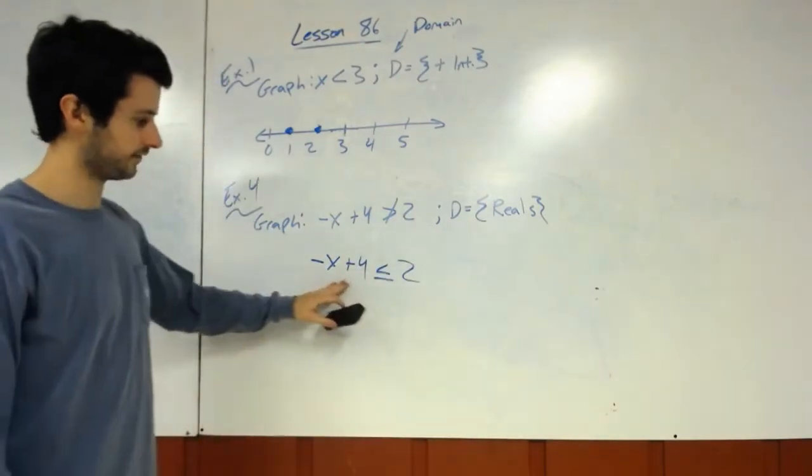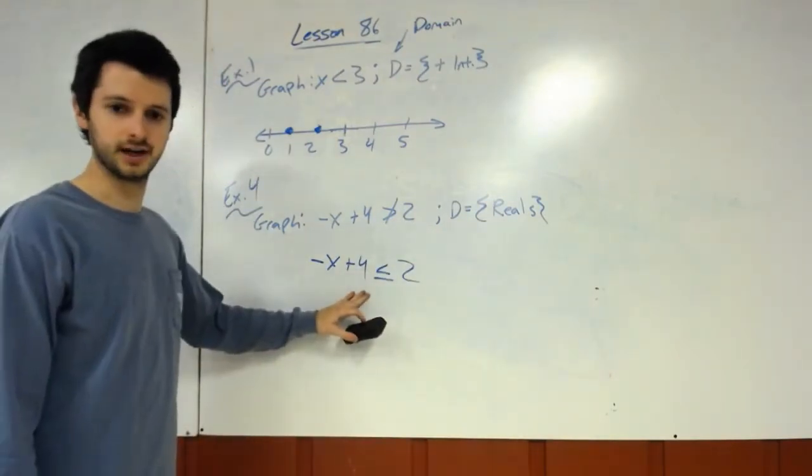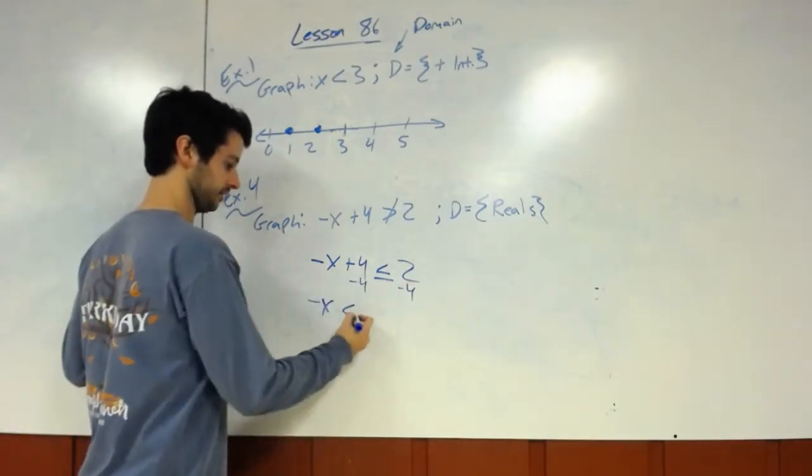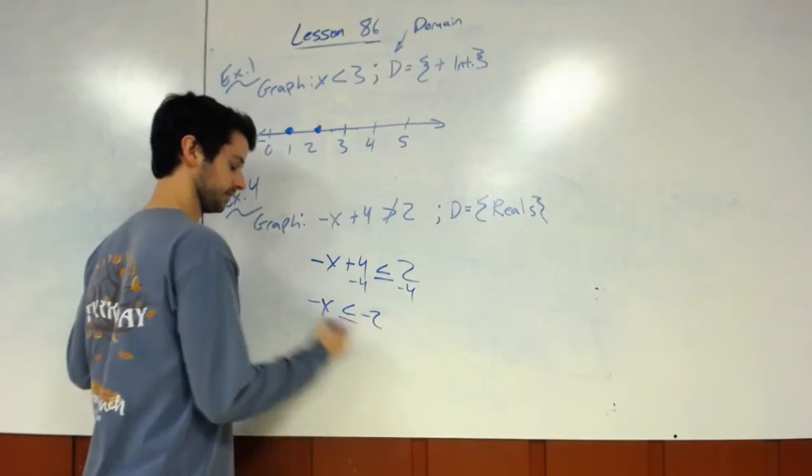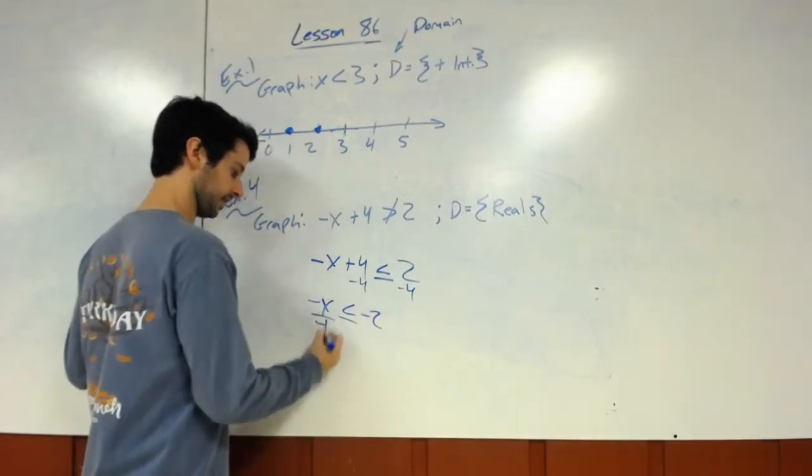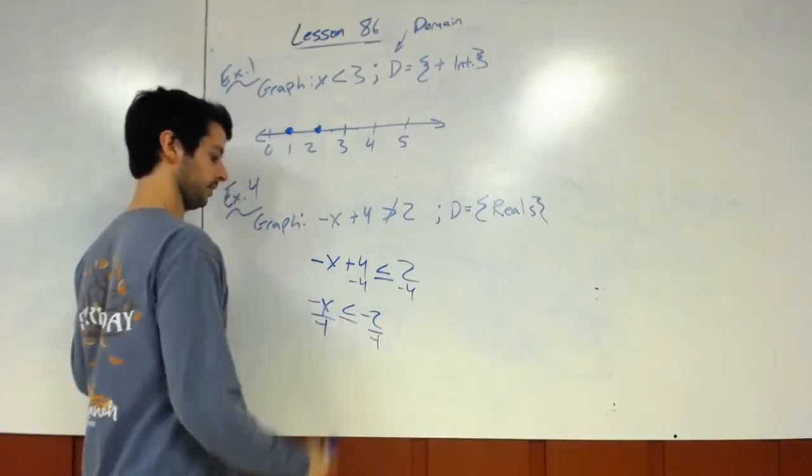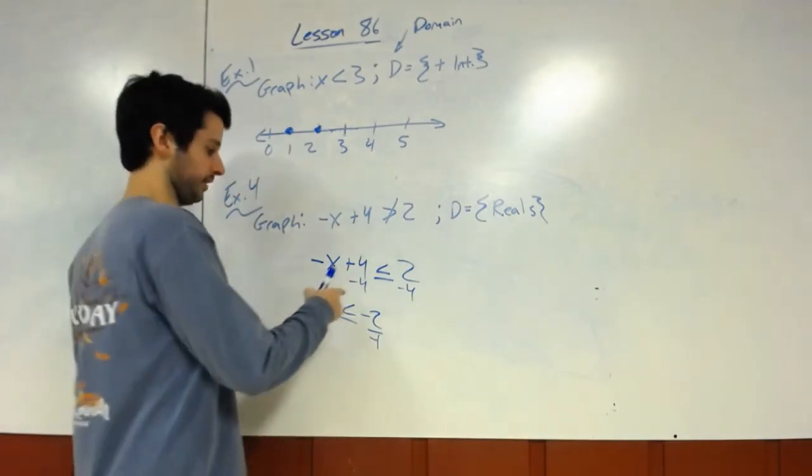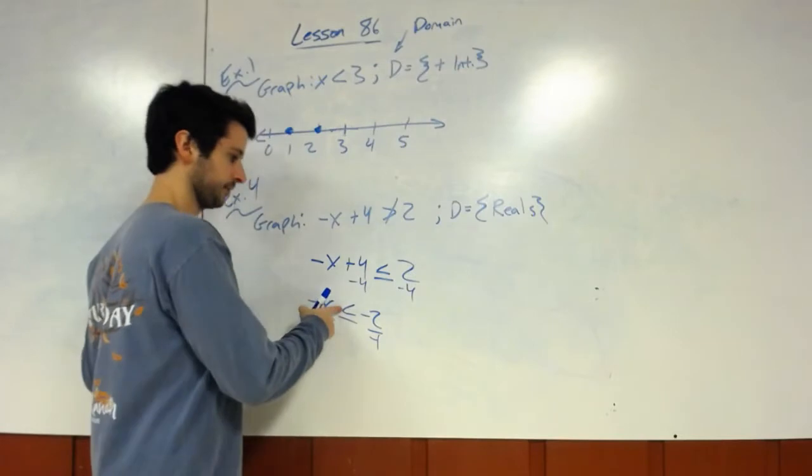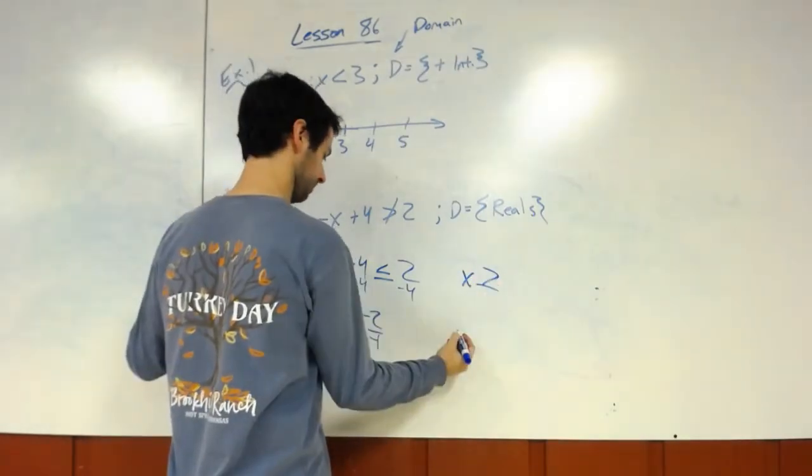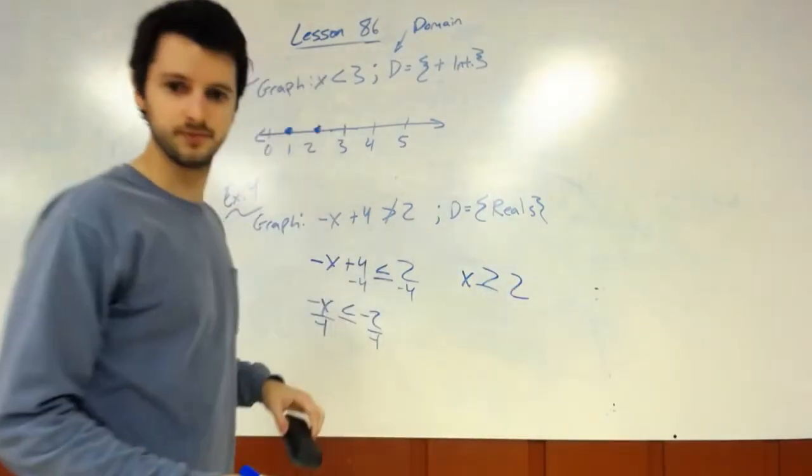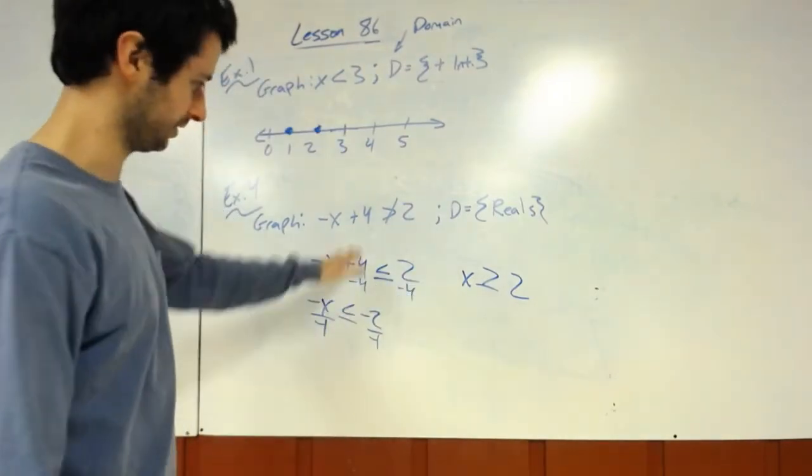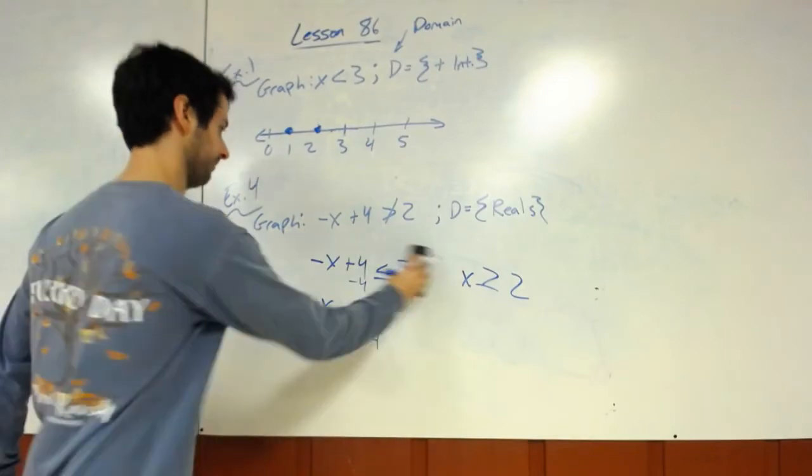And now we'll get to the domain in a second. Negative x plus 4, now we've got to solve for x. So we subtract 4, negative x, less than or equal to negative 2, divide by negative 1. And when we divide by a negative, when we divide or multiply by a negative, we have to switch the sign. So it becomes x is greater than or equal to a positive 2. x is greater than or equal to positive 2. So we've got from here to there. Now let's talk about graphing it.